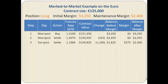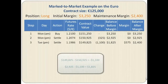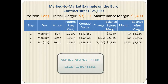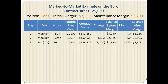In step 3, Tuesday at closing time, the futures rate settles at 1.1986 and the contract value is $149,825. This is a drop of $1,100 from the previous day and the balance drops to $1,825. This is below the maintenance margin of $2,400, so a margin call is triggered and the buyer is required to add $575 to the margin account to bring the balance up to $2,400.